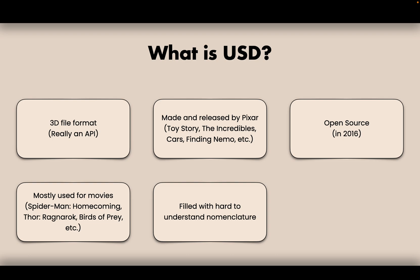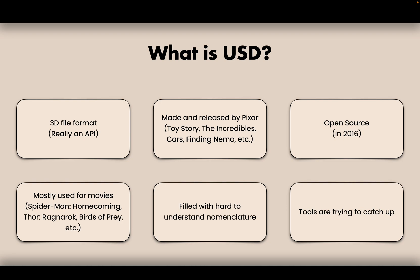USD is also filled with really hard-to-understand nomenclature — basically the names of things. Things like variants, links, references — what does that mean? What is a prim? It is confusing, especially when you read the documentation. It's very technical right now, and a big reason for that is because the tools are trying to catch up. USD was released as a file format — really cool — but no tooling was released with it. All the tools out there still need to make USD easy to use within them. Right now it isn't, but they're trying to get there.